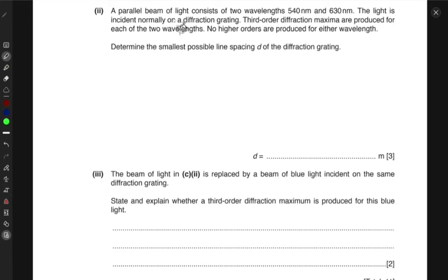Next, a parallel beam of light consists of two wavelengths, 540 nm and 630 nm. The light is incident normally on a diffraction grating. Third order diffraction maxima are produced for each of the two wavelengths. No higher orders are produced for either wavelength. So only third order maxima is produced. Determine the smallest possible line spacing D of the diffraction grating.